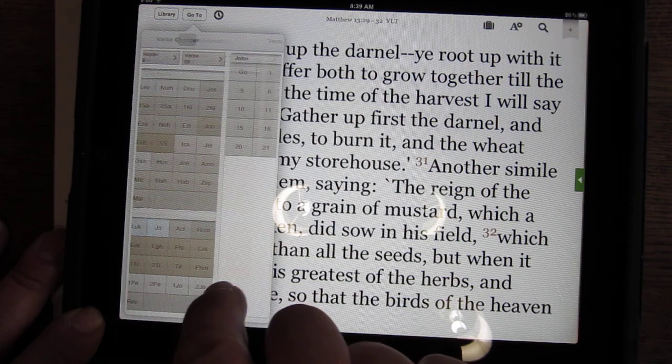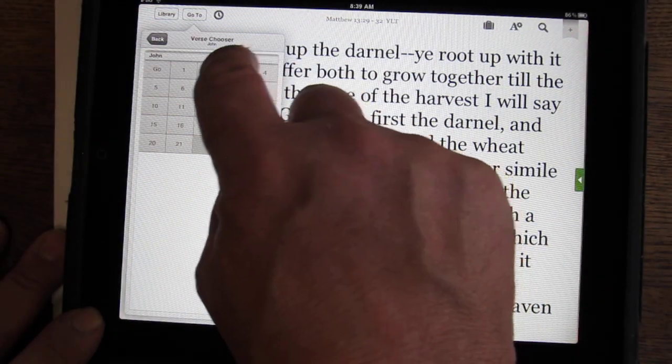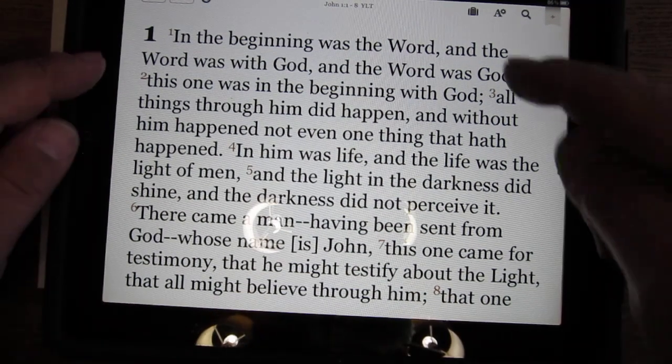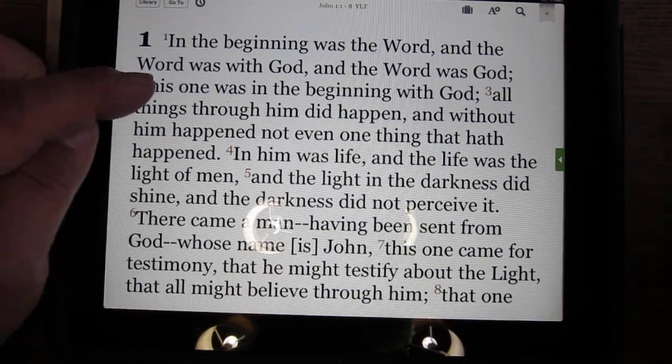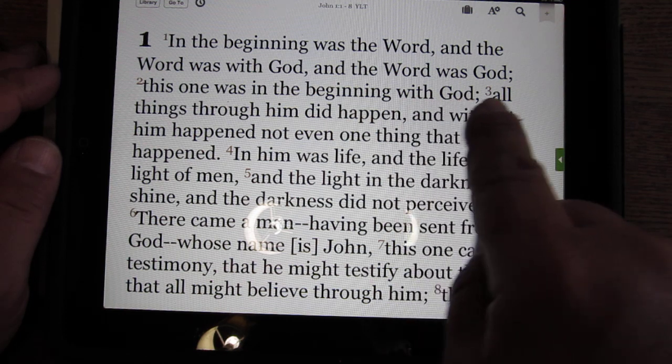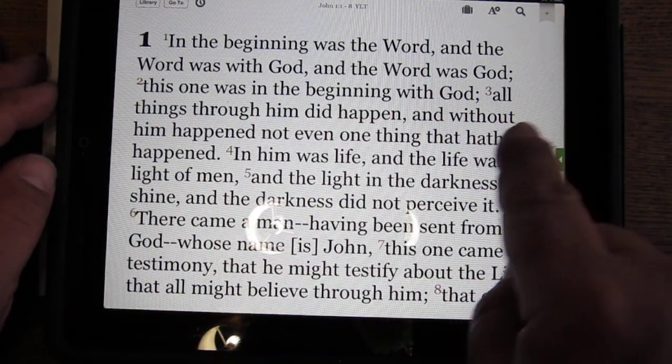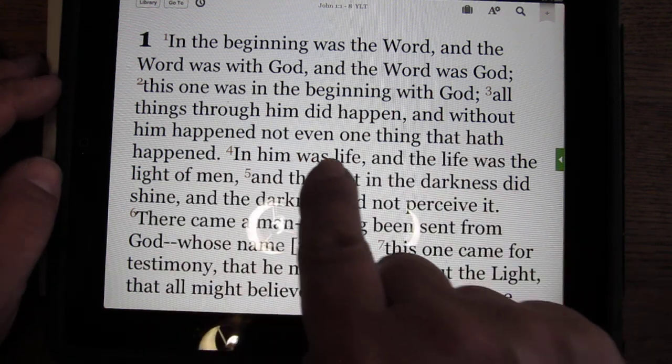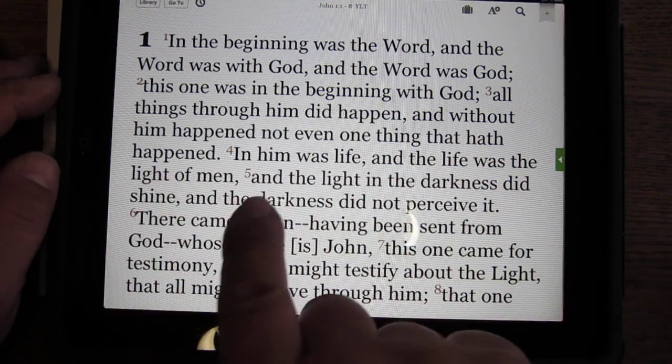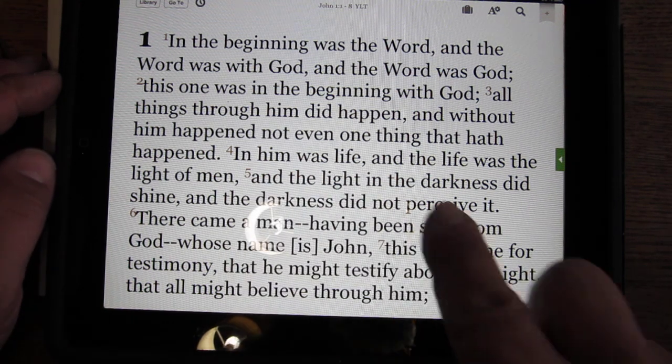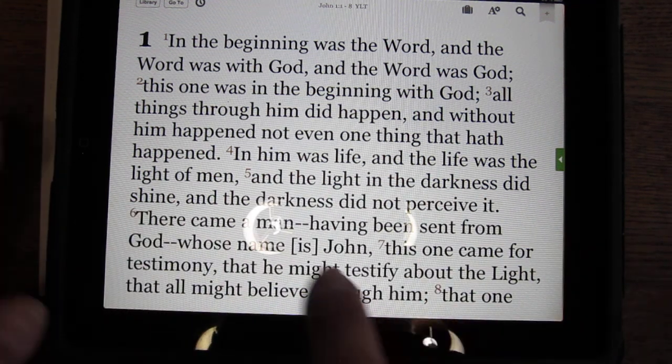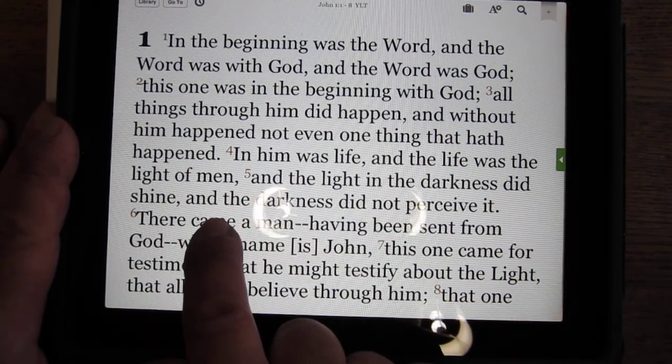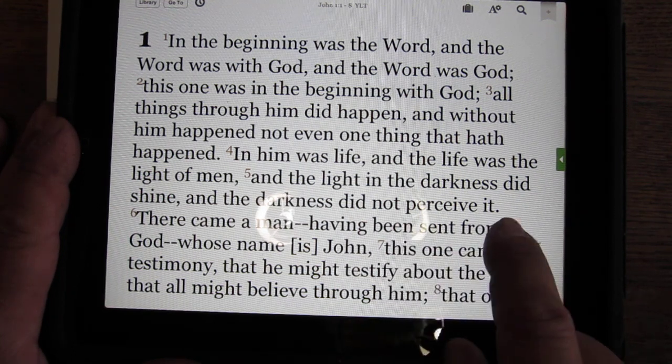When a psychopath liar gets you to believe a lie, what they're doing is they're actually making you sacrifice the truth, and they become, in the devil way, they become now, because you sacrifice the truth, they become the truth, in their darkness, and the Bible talks about this. Men love darkness, and this is the judgment. Let's go to John. In the beginning was the word, and the word was with God, and the word was God. In him was life, and the life was the light of men. Light, and the light in the darkness did shine, and the darkness did not perceive it.